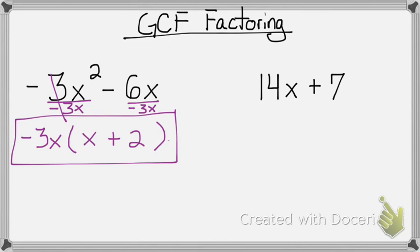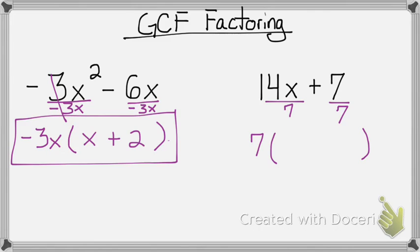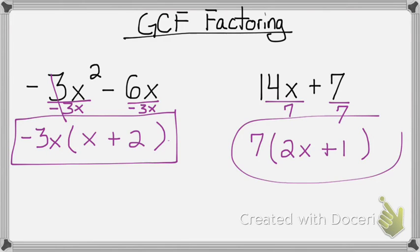Looking at the second example, same thing. The largest number that I can divide into 14 and 7 is 7. And then between my variables of x and nothing, there's nothing, so 7 is my GCF. I'll divide 7 into each one, and I'm left with 2x plus 1. And that's it.